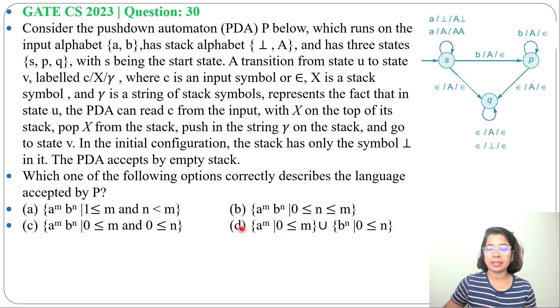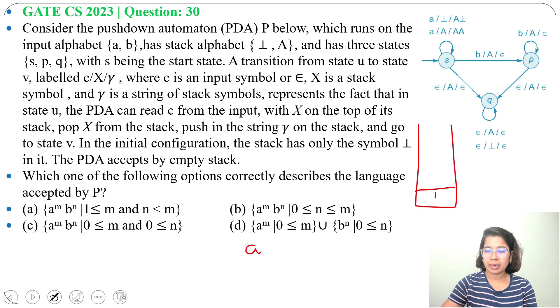Let's check which string it is accepting. Will it accept single A? For A, in stack, initially tau is given. For A, it will push A. Next, by seeing epsilon, it will pop A and again pop the tau. Now stack is empty. The PDA accepts by empty stack. So for accepting a string, stack should be empty. So it accepts single A.